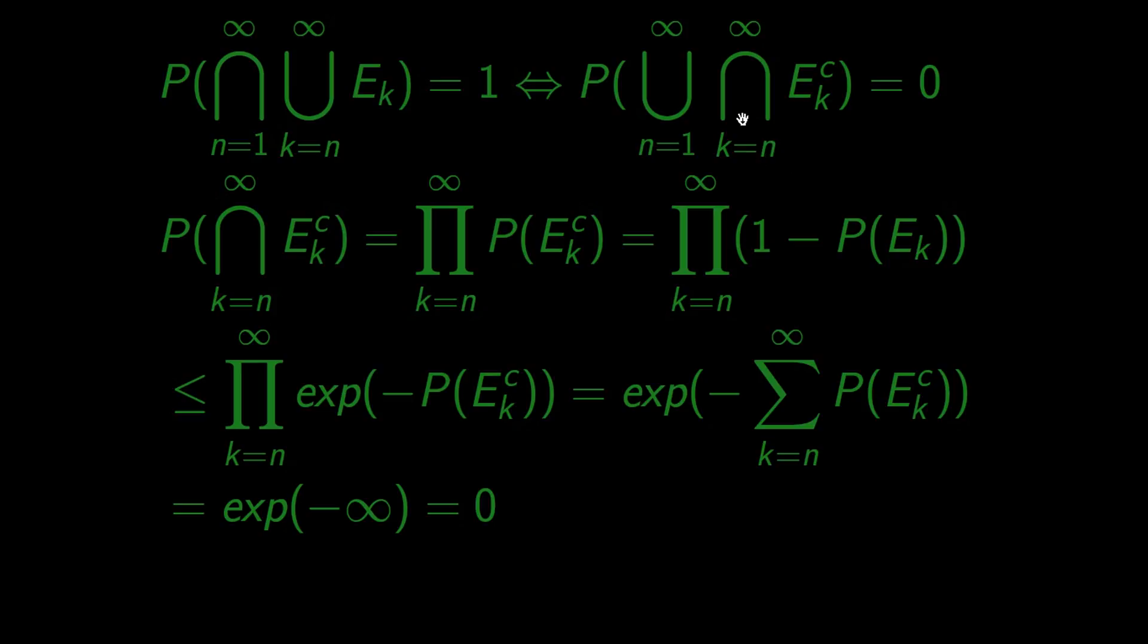This is equivalent to saying that for any natural number, the probability of getting a successful trial beyond it is one. There we go, we proved the second half of the Borel-Cantelli lemma.